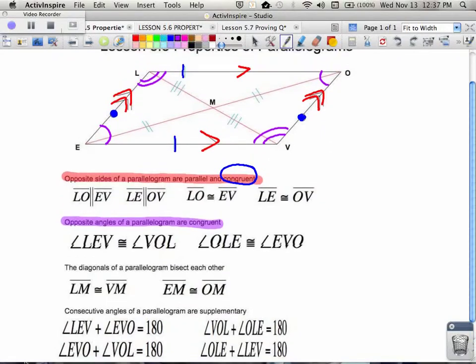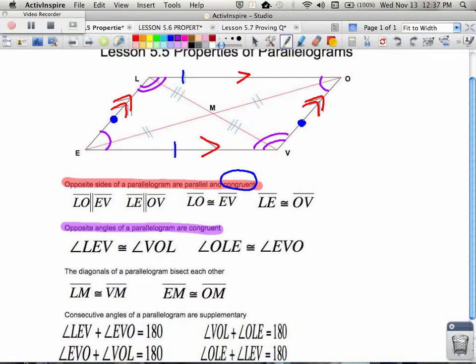We also know that in a parallelogram the diagonals bisect each other. Not that they're equal, but they bisect each other. So that means I know that the individual pieces of LM and VM are congruent to each other. Perhaps they're both three units long.